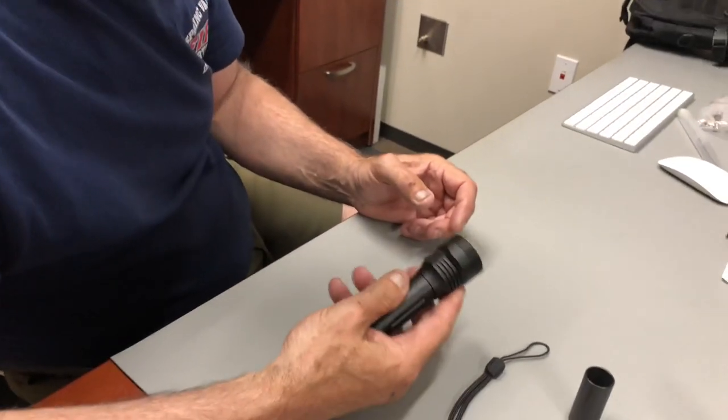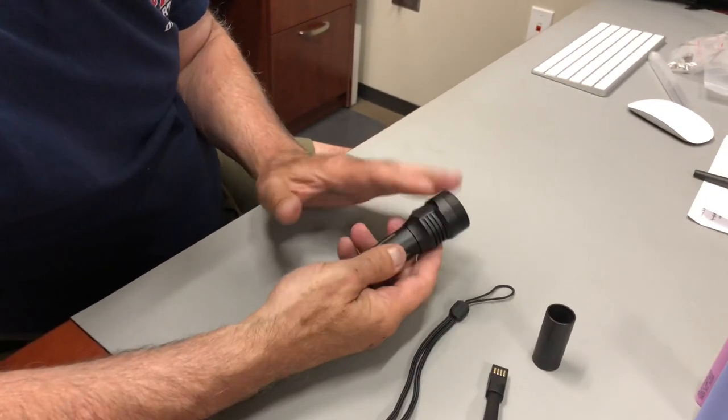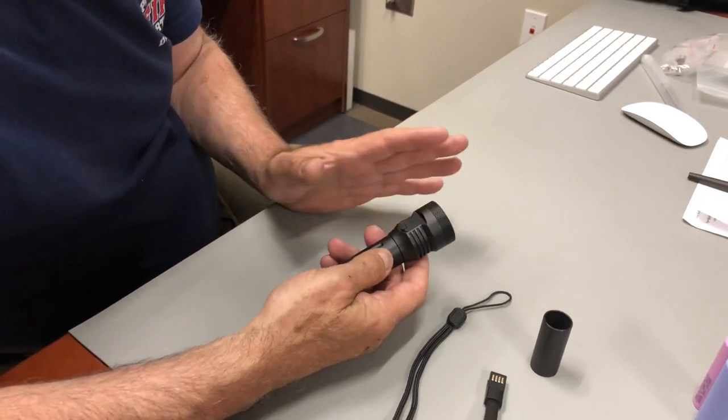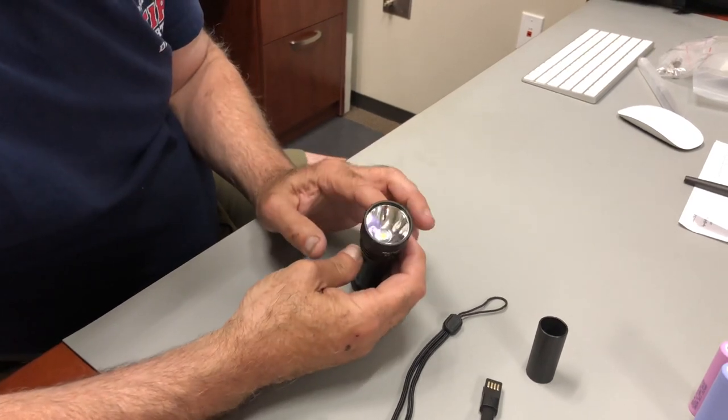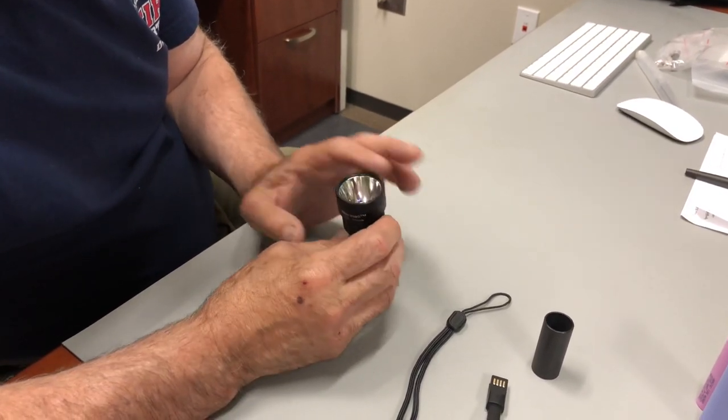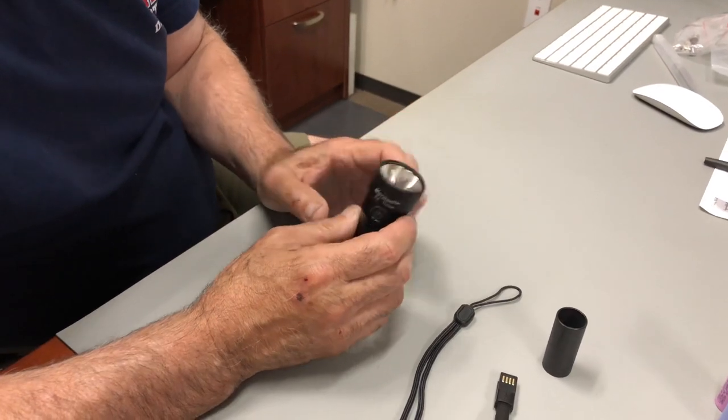All right. Let's talk about the length of this. It's 4.5 inches long. One inch in diameter. That's one inch on the tail cap. It's got a simple, nice reflector inside, a polished reflector. No orange peel or anything like that, so it throws really nice.